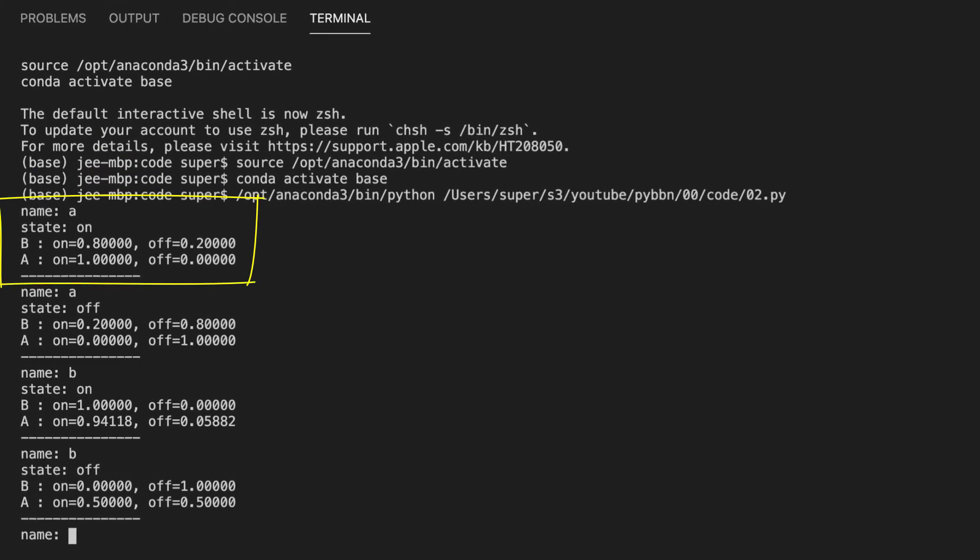When I run this program, if I type in a followed by on, you can see the state of the variables b and a. Notice how a is 100% on, because that's the evidence we asserted. When a is 100% on, b is 80% on and 20% off. When I assert a is off, then a is 100% off, and b is on 20% and off 80%. The results follow the conditional probabilities I specified.